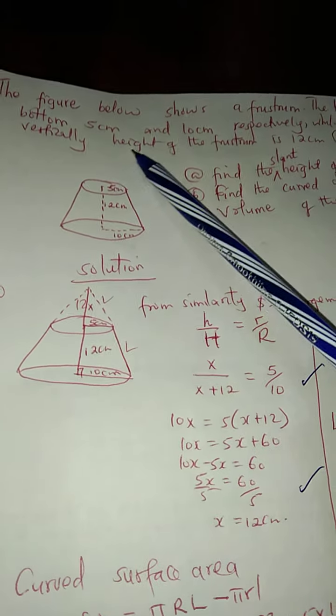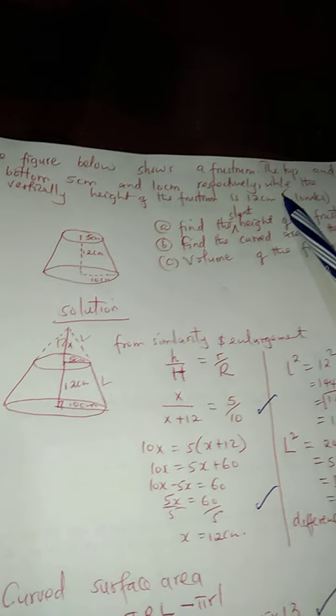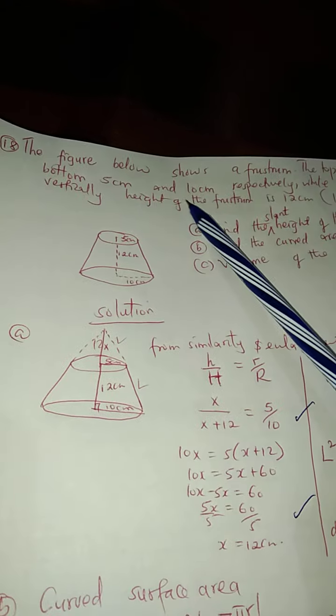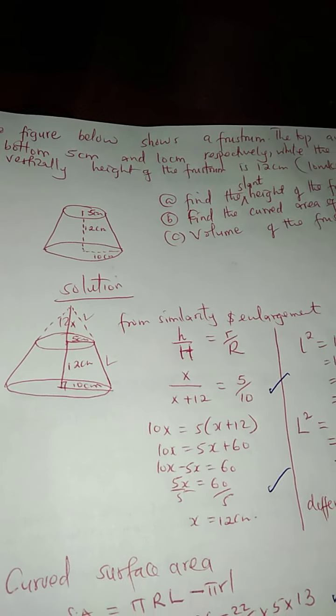Today we want to look at the frustrum. The figure below shows the frustrum. The top and the bottom are 5 cm and 10 cm respectively, while the vertical height of the frustrum is 12 cm. When I talk of frustrum, that is just a cone that has been cut. There is a portion that has been cut.